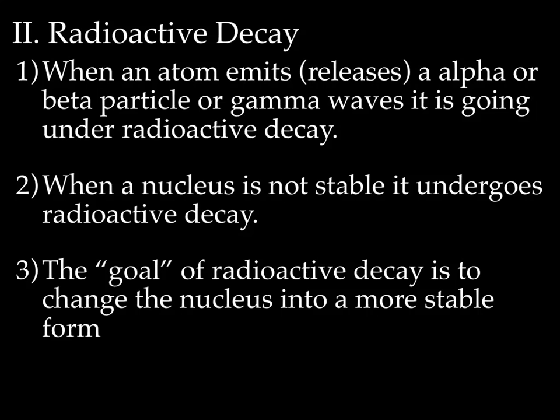Radioactive decay. When an atom emits or releases an alpha or a beta particle, or gamma waves, it's going under what we call radioactive decay. When a nucleus is not stable, that's when it goes under radioactive decay. And the goal of radioactive decay is to change the nucleus to a more stable form. So it's releasing particles, these alphas, these betas, and these gammas, to make things less crowded so that the nucleus can become more stable.